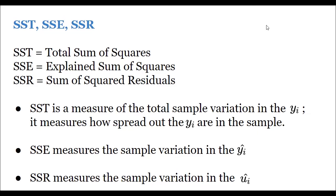SST measures the total sample variation in y_i — how spread out the y_i are in the sample. SSE measures the sample variation in ŷ_i, since it is the explained sum of squares. SSR measures the sample variation in the residuals, û_i.